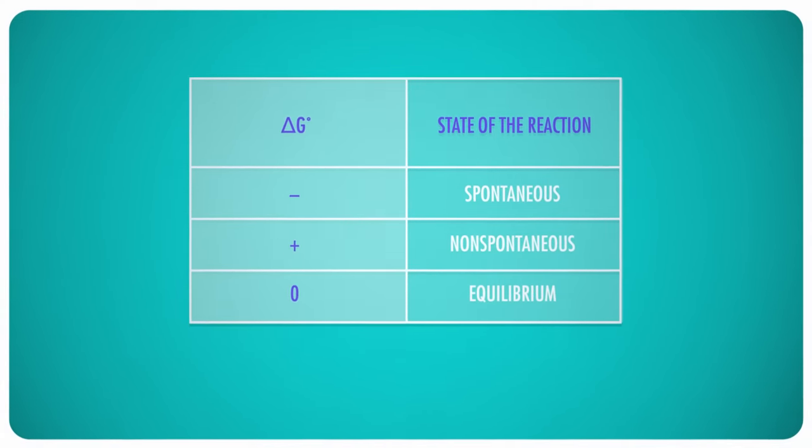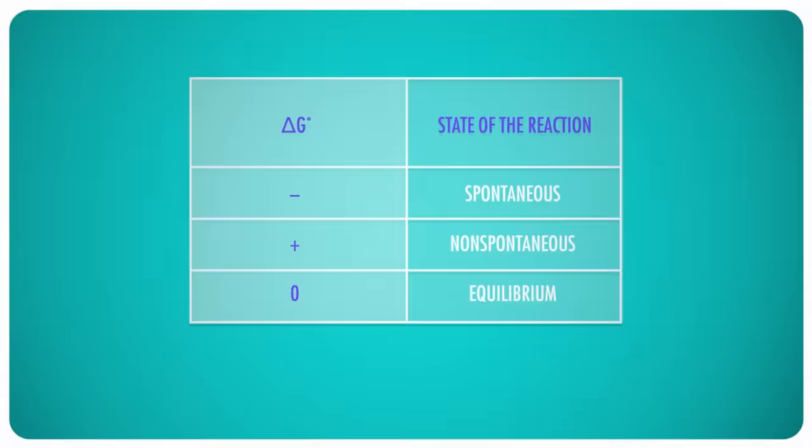If delta G is zero, the reaction is in an equilibrium state, and no discernible change occurs in either direction. So what about the reaction I just did? Is it spontaneous at room temperature? Can it occur without energy driving it along? Well, yes, because we just watched it happen, but let's do the math!